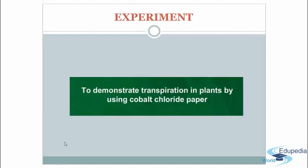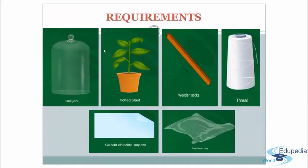Now we will discuss an experiment to demonstrate transpiration in plants using cobalt chloride paper. This is a very important experiment. The requirements are: a bell jar, a potted plant, wooden sticks, thread, cobalt chloride paper, and a polythene bag.